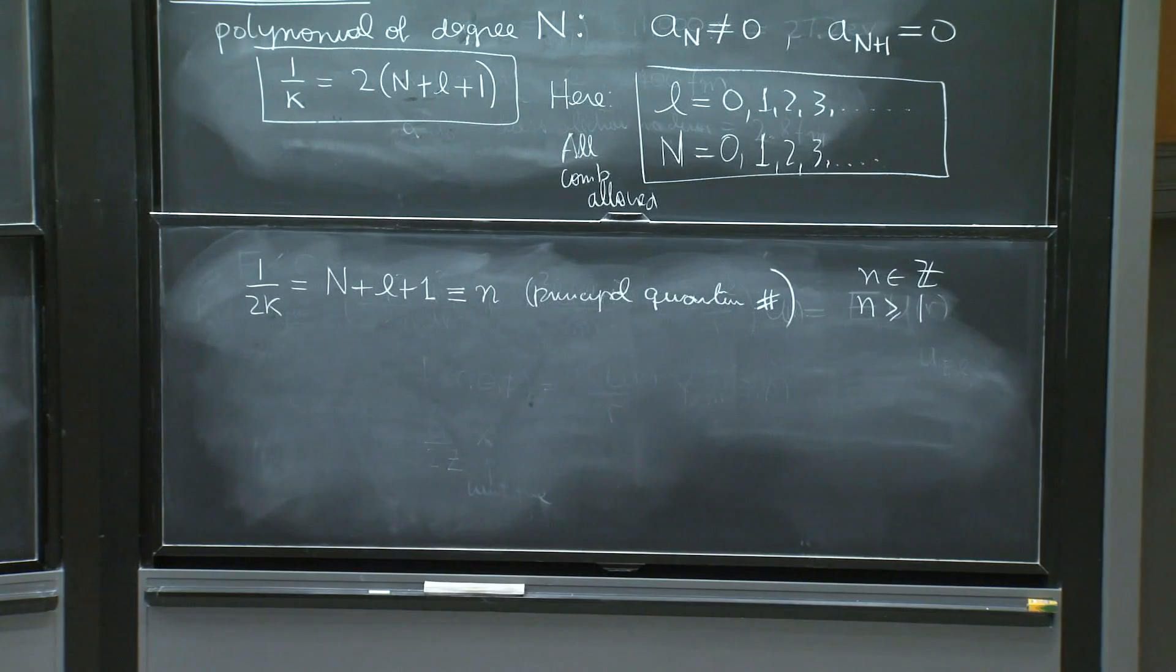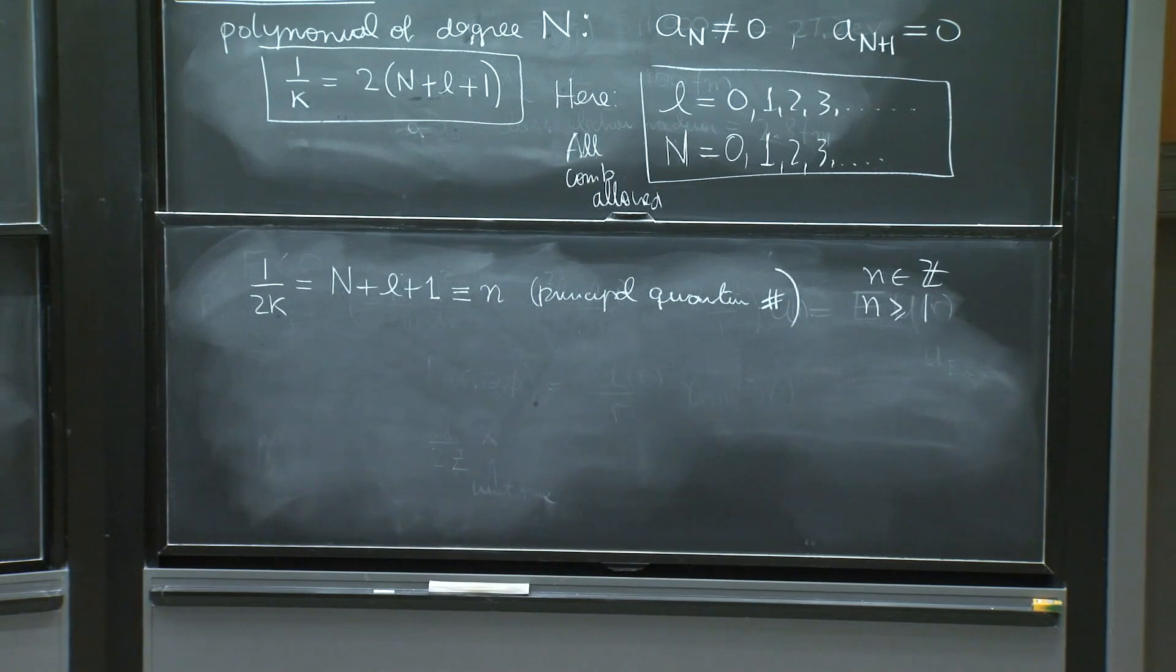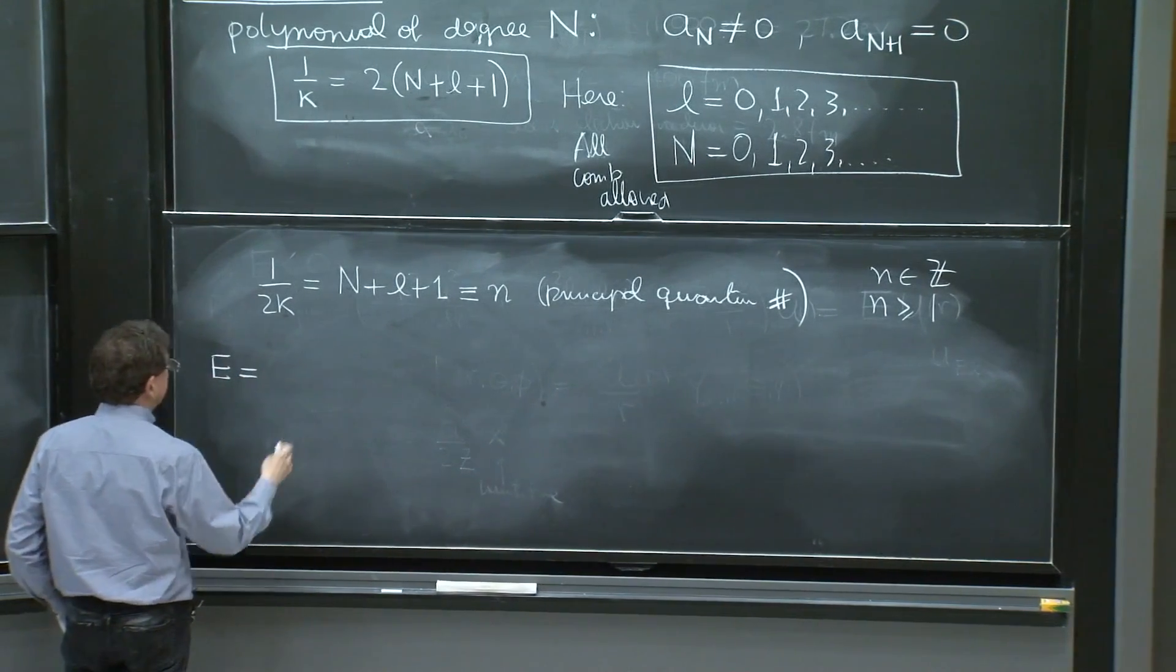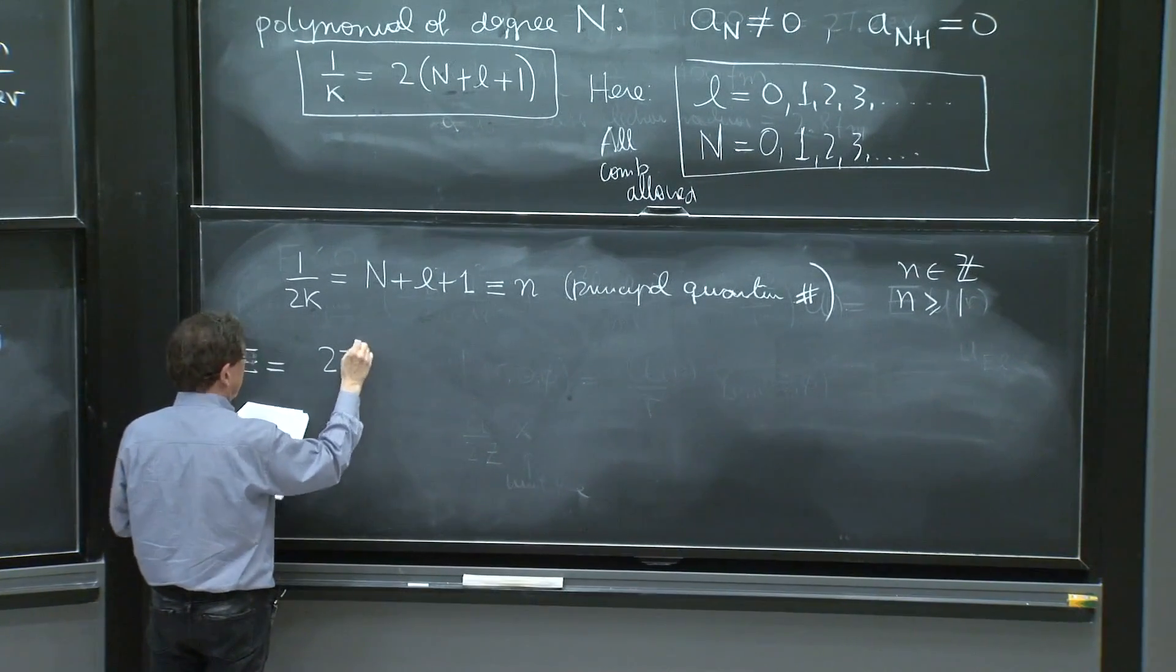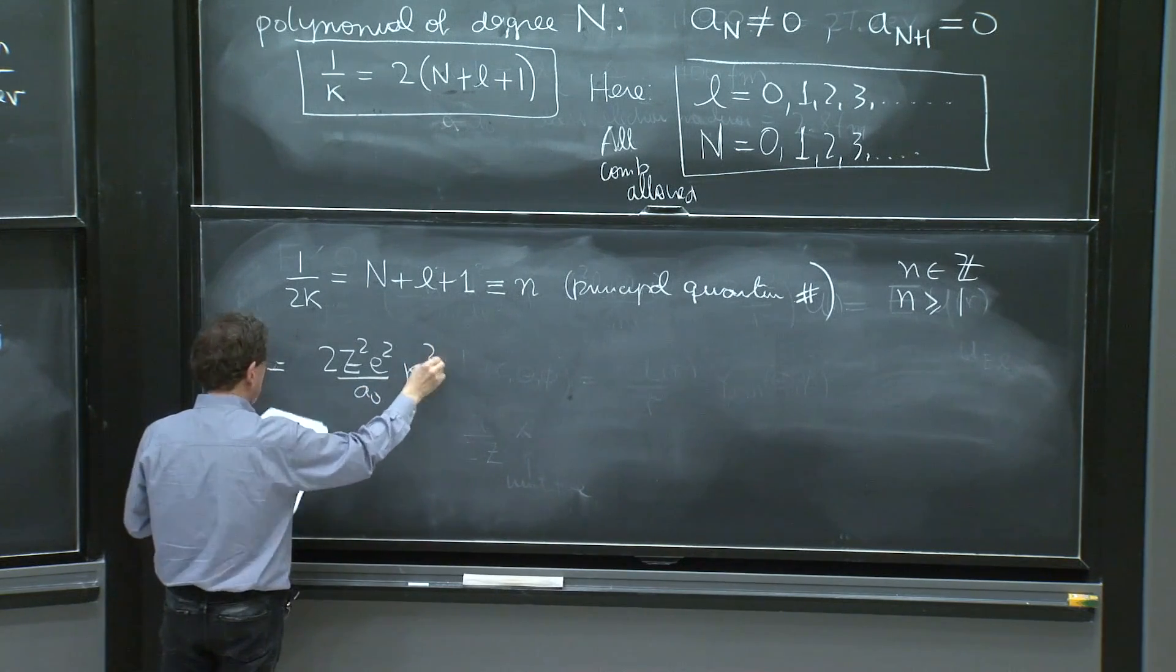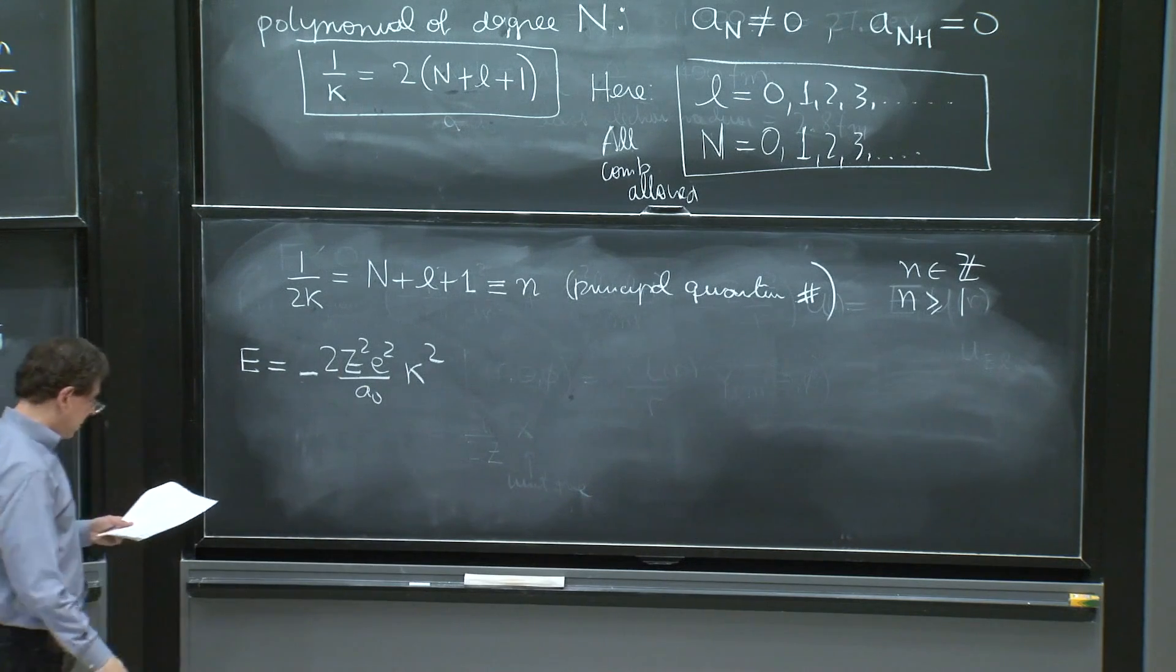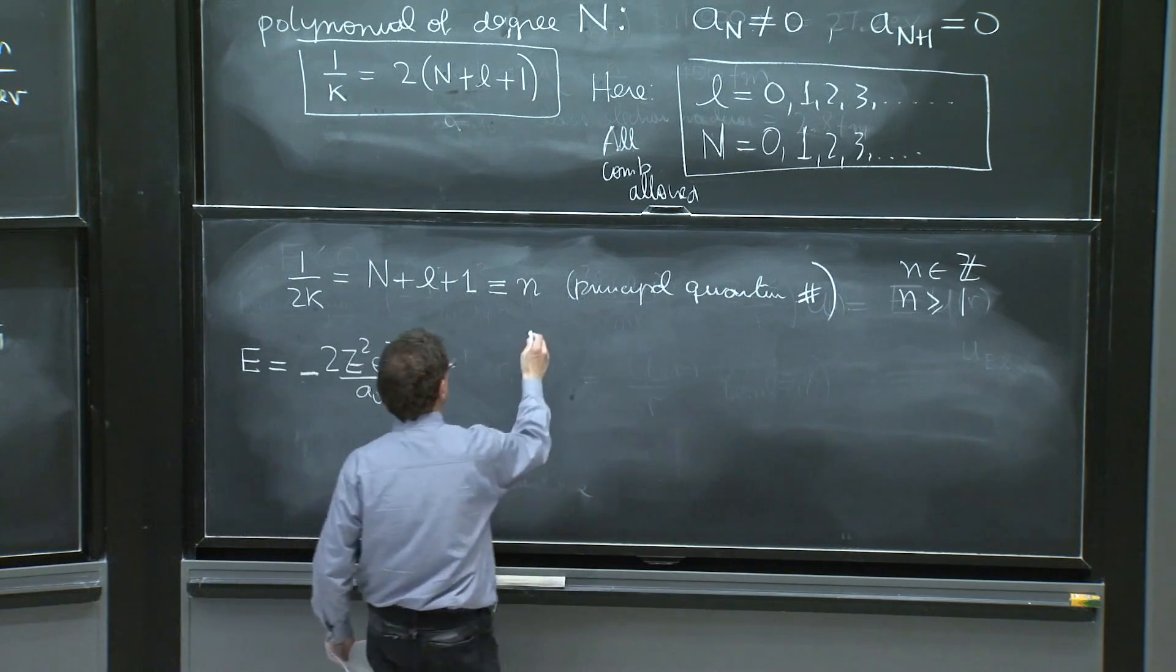So let's classify this and understand it a little better. So what did we have for the energy? Remember the energy divided by the dimensionless factor. Well, to make it dimensionless, z squared, e squared over a0 kappa squared. We wrote actually that e divided by this quantity, which has units of energy was kappa squared. So kappa squared now, kappa is 1 over 2n.